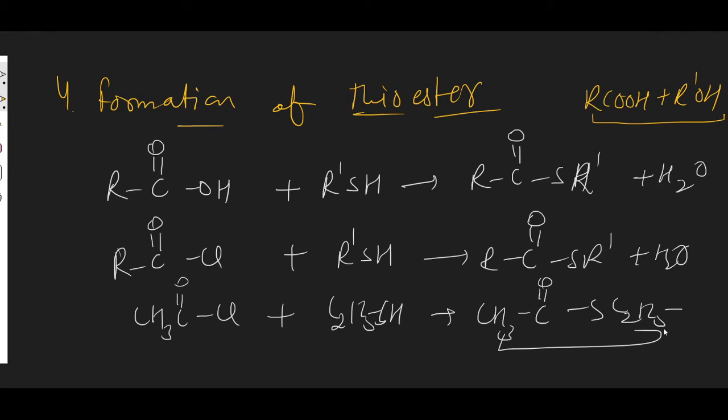Hello students, welcome you all at Resolution Study Point. Today we are going to discuss the remaining chemical properties of thiols. In the previous lecture we discussed four chemical properties of thiols, up to the formation of thioester — that is, thioester is formed by the reaction of carboxylic acid and its derivatives with thiols. In this lecture we are going to discuss the remaining four chemical reactions.